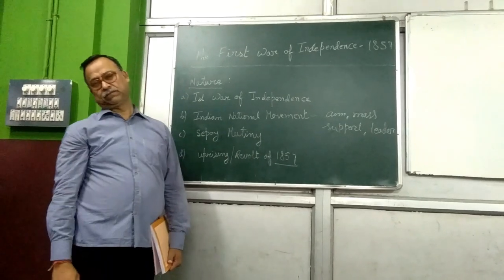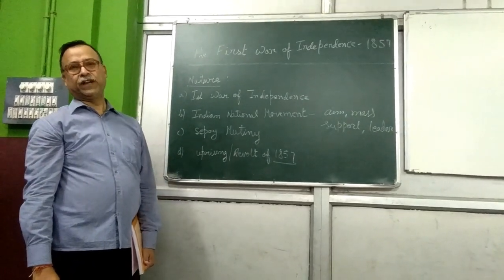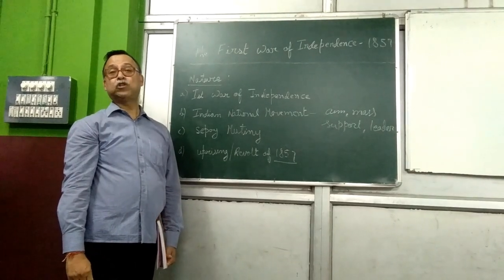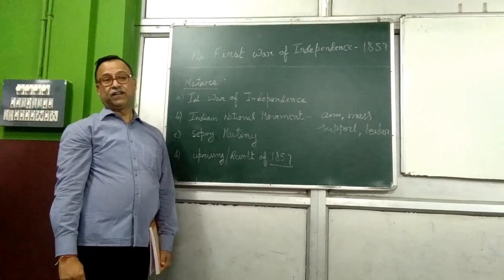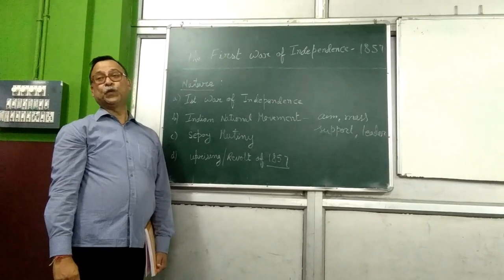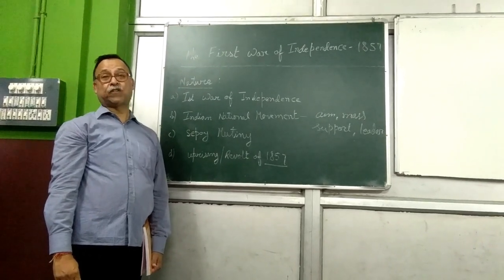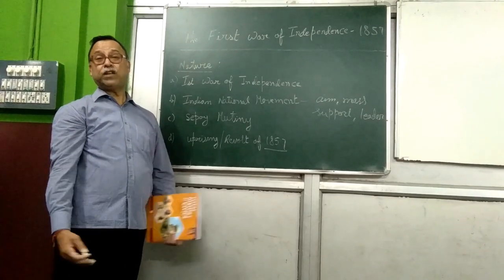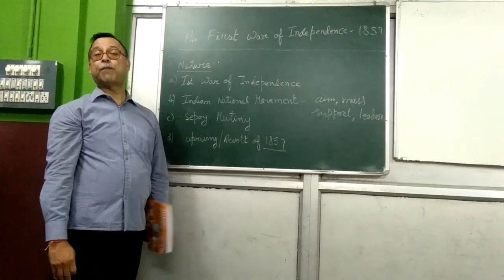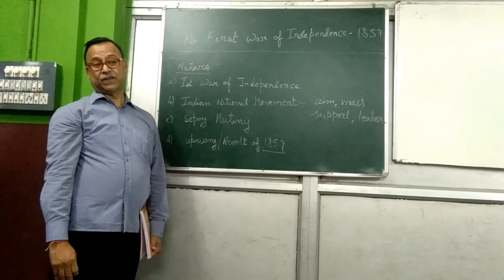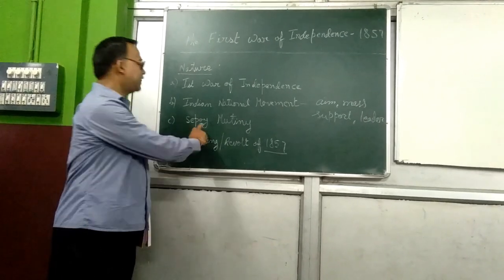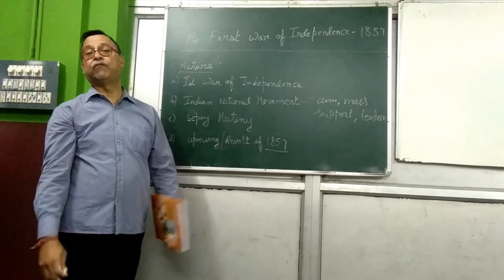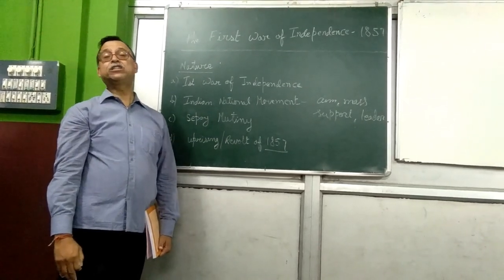Then, let's come to the point of Sepoy Mutiny. It was the sepoys in Meerut who were against the various policies, particularly the use of the Enfield rifles. So to some extent, we can say there was a Sepoy Mutiny — the soldiers revolted against British policies.